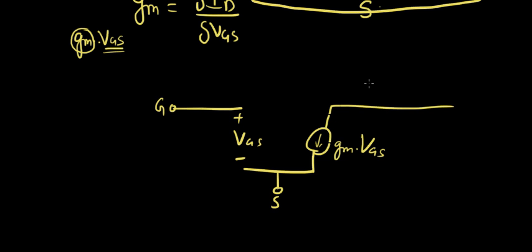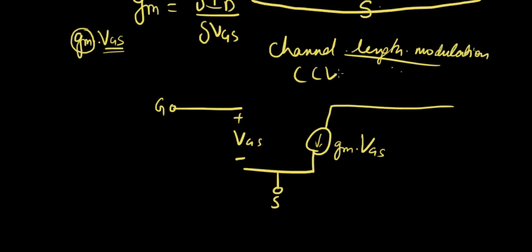This is your GM times VGS current flowing from the drain to the source. Let's first look at channel length modulation. I mean the effect of that, or rather including that for small signal model. Let's call it CLM just for convenience. It's too long to write every time.